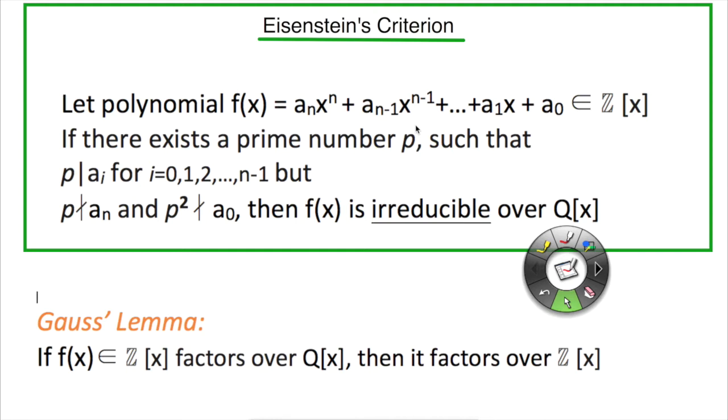The criterion states: let polynomial f(x) equal a_n x^n plus all the way to a_0, so the standard form of a polynomial as we know it, and let the polynomial be in the integer polynomial ring. It states that if there exists a prime number p such that p is a divisor of a_i for i equals 0 all the way to n minus 1. Notice it's not 0 all the way to a_n, but rather n minus 1.